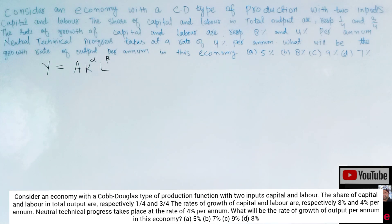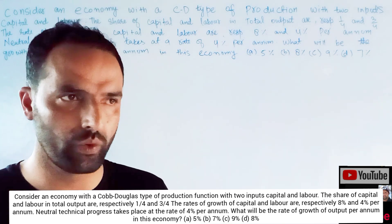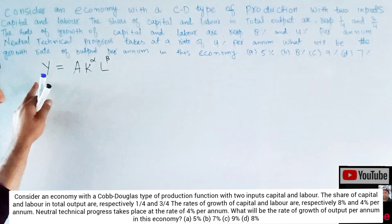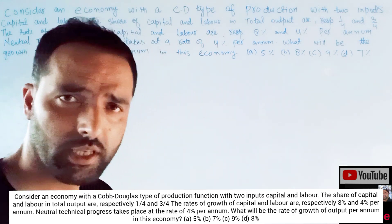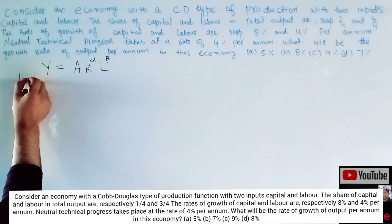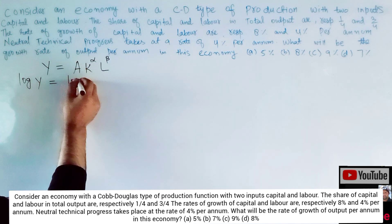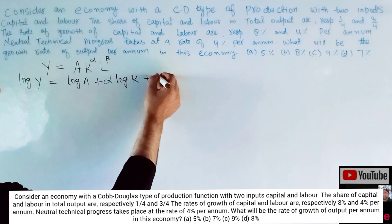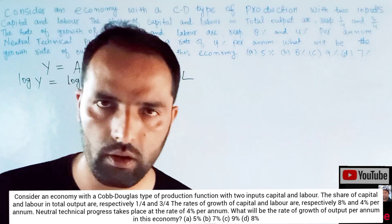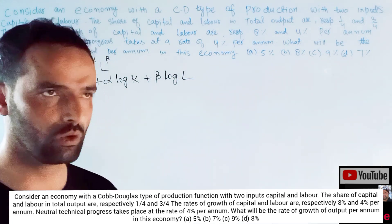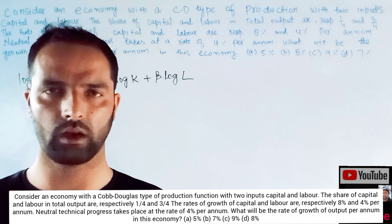First we need to derive the growth equation for this economy. The first step is to take the logarithm on both sides. If we take log on both sides, we get: log y = log A + alpha·log K + beta·log L. We are applying the standard logarithm rules.